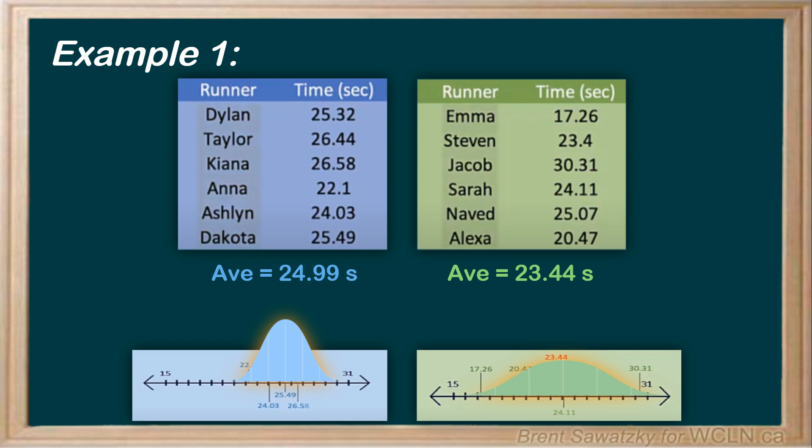Again, this spread is called the standard deviation, and standard deviation can be shown in the shape of the data distribution or as a number. In our example, the standard deviation for the green team, if we calculate it, is 4.03 seconds.